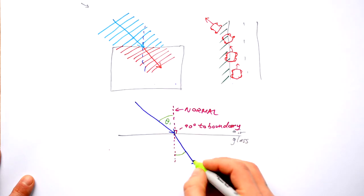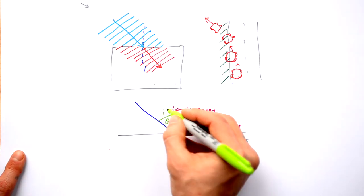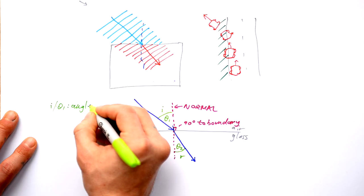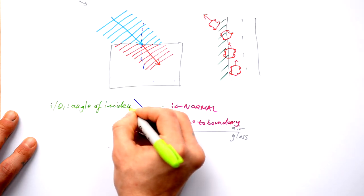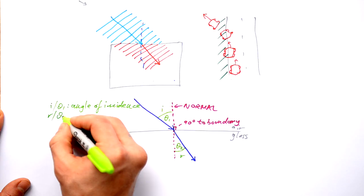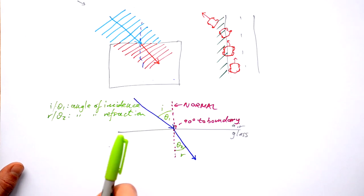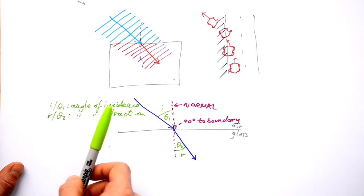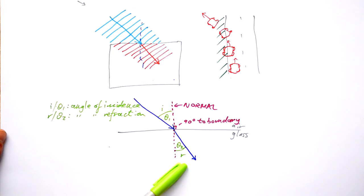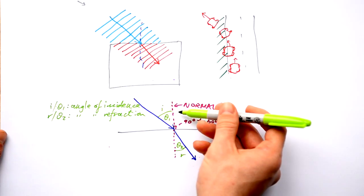We measure angles from the normal, so we give this angle theta 1 and that angle theta 2. We could also call them i and r — the angle of incidence and the angle of refraction. We never measure the angle between the boundary and the ray itself. If the light ray slows down going into a new medium, we can see it bends towards the normal. Generally when we talk about refraction, we mean a change in speed that results in a change of direction. If light was going along the normal it would slow down but wouldn't change direction, so it wouldn't be considered refracted.